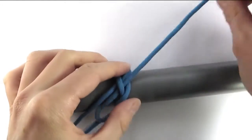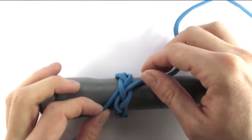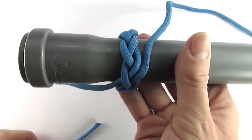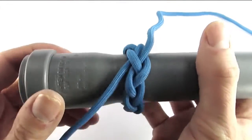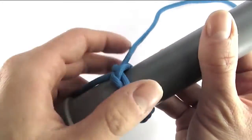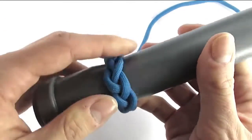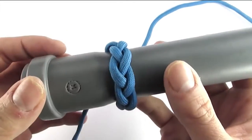This completes the first pass of the woggle, and all we need to do now is adjust it if we're going to use it like that. It is far more common to double up the knot though, so I'm going to show you how to do that as well.